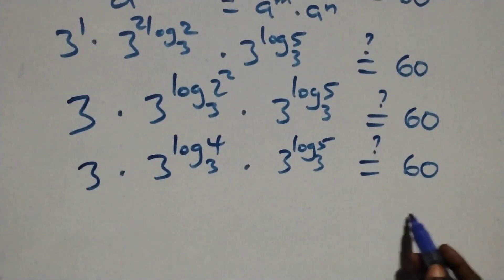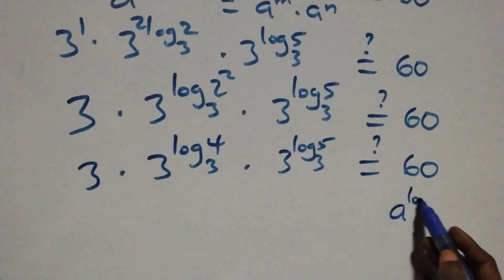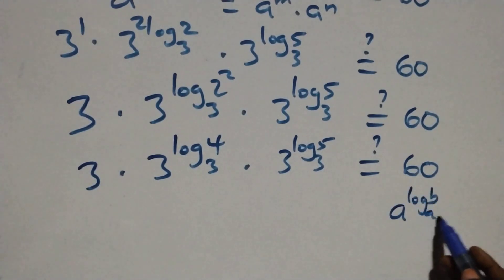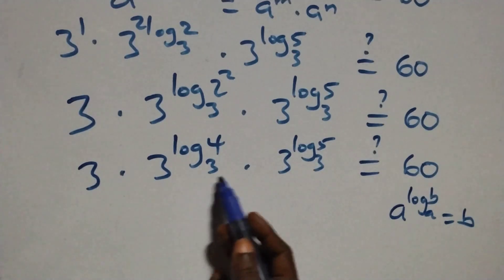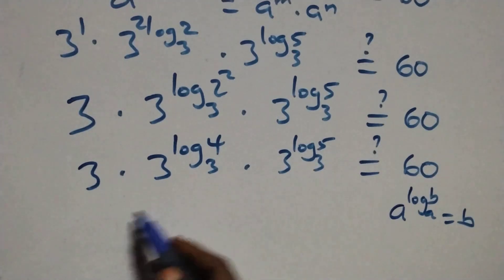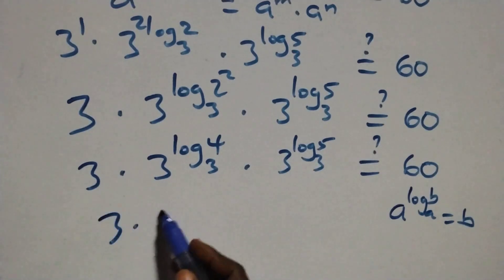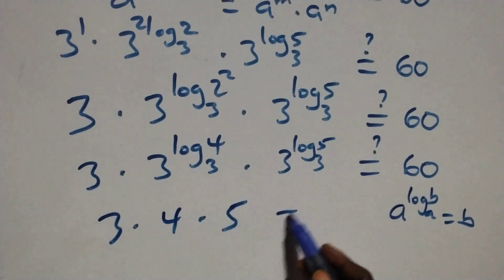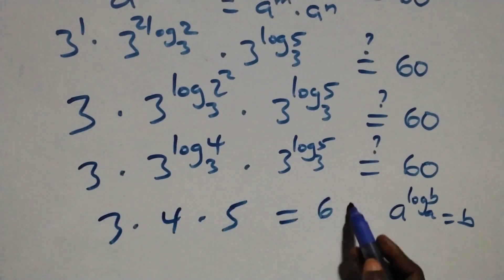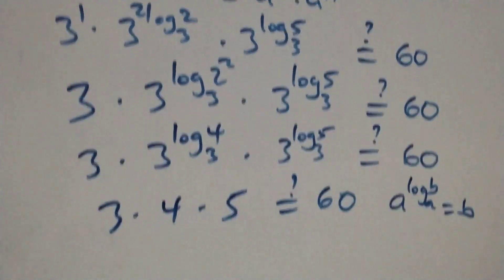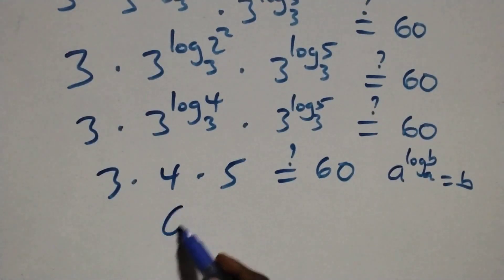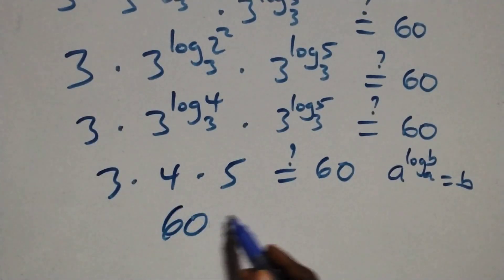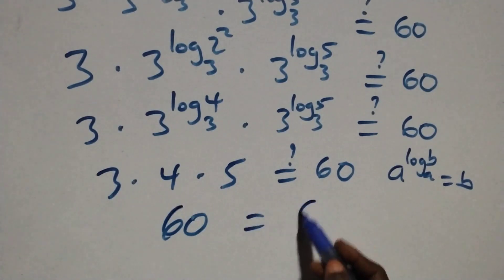This follows the law of logarithms: when we have a raised to power log_a(b), this is the same as b. So here we have 4 and here we have 5. Therefore: 3 times 4 times 5 equals 60. And 3 times 4 is 12, and 12 times 5 is 60, which equals 60. Left hand side equals right hand side.